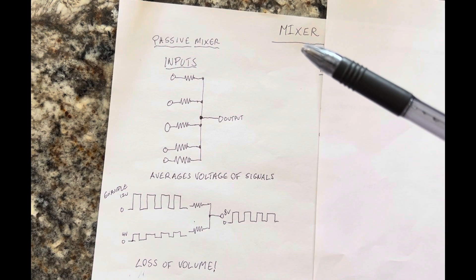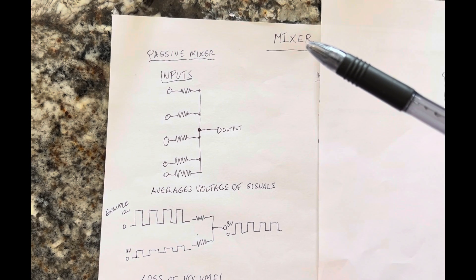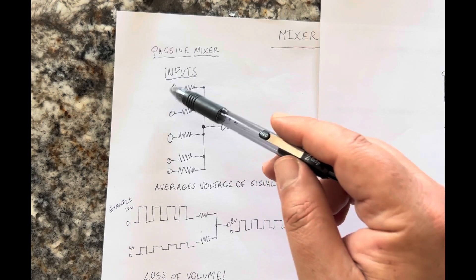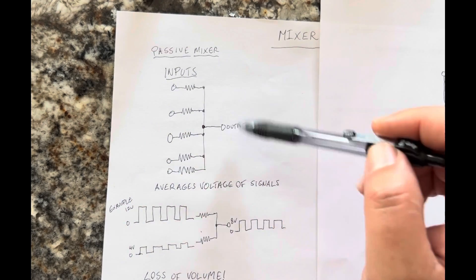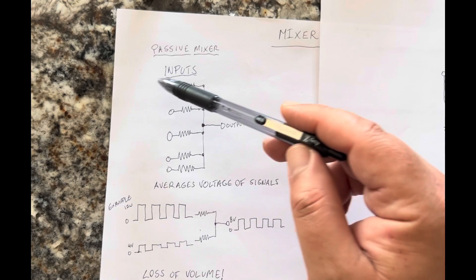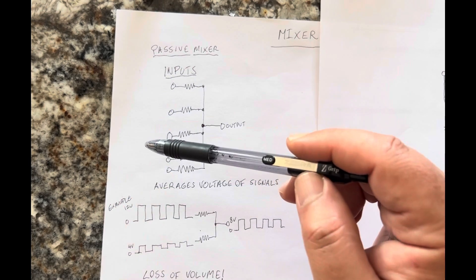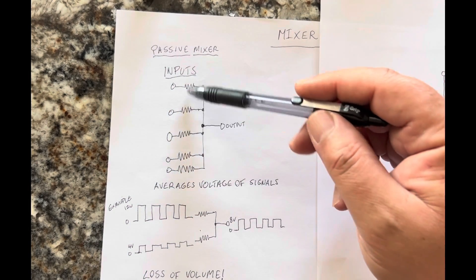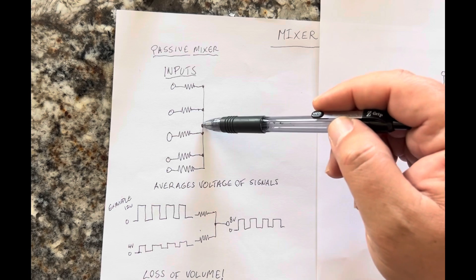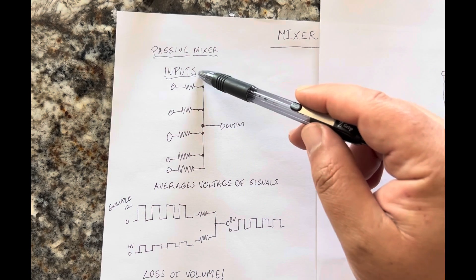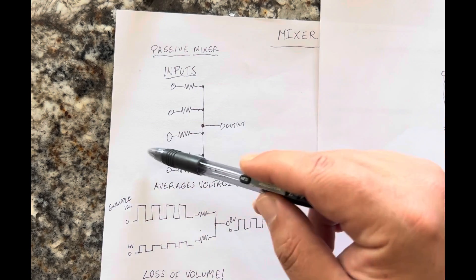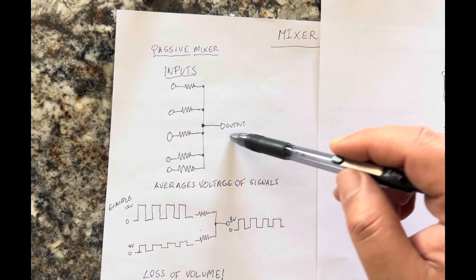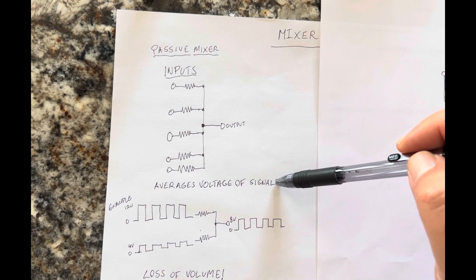One is the passive mixer circuit. The passive mixer circuit is basically where you take whatever, these are inputs to the mixer but outputs from the various voices, so the snare drum, tom, kick, hi-hat, cymbal, all of those are fed through resistors and connected together, and that's your output. That passively mixes the signals. The output of that ends up being an average voltage of all the signals.